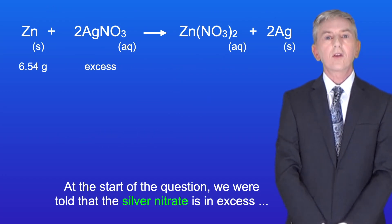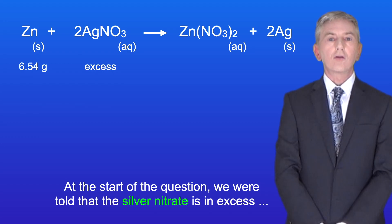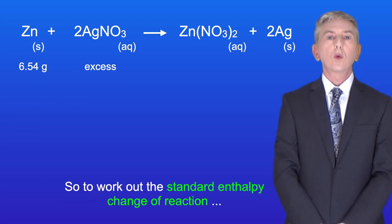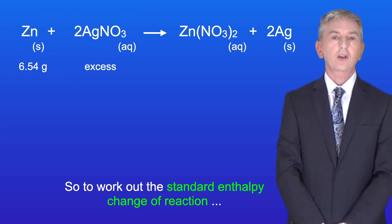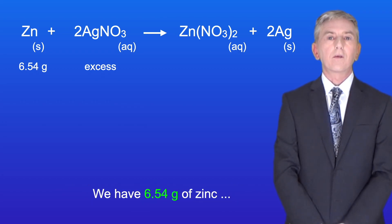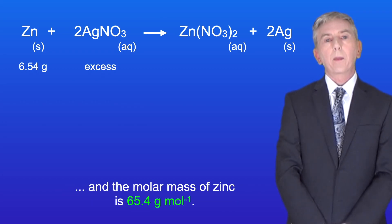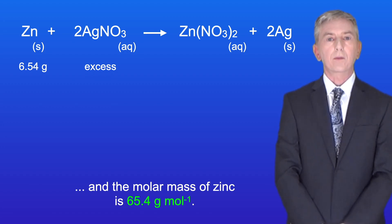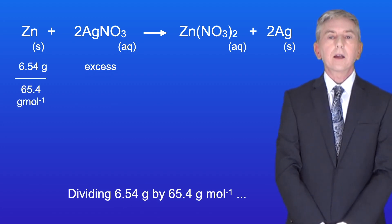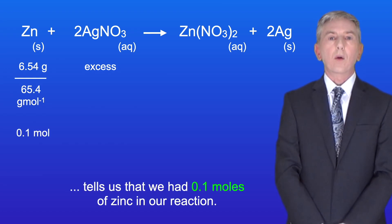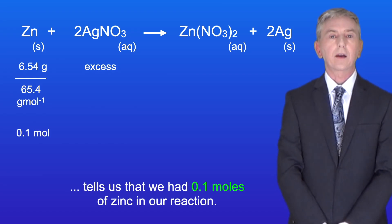At the start of the question we were told that the silver nitrate is in excess and the zinc is the limiting reagent. So to work out the standard enthalpy change of reaction, we need to divide the heat energy by the number of moles of zinc. We have 6.54 grams of zinc and the molar mass of zinc is 65.4 grams per mole. Dividing 6.54 by 65.4 tells us that we had 0.1 moles of zinc in our reaction.